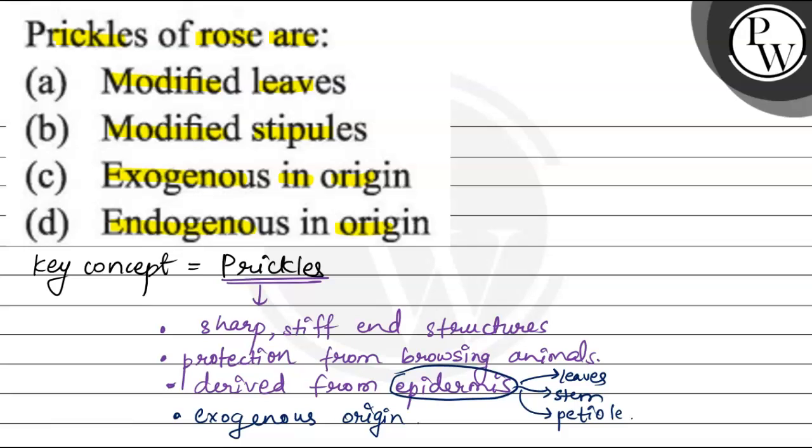Let's see the option. First option is modified leaves. This is incorrect. Leaf modification is not a prickle. Modified stipules. This is also incorrect. Stipules with the stem is not a modification.